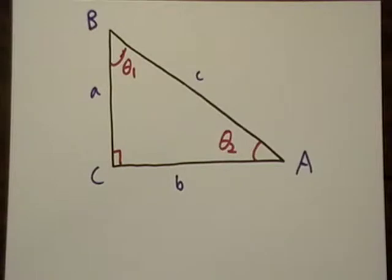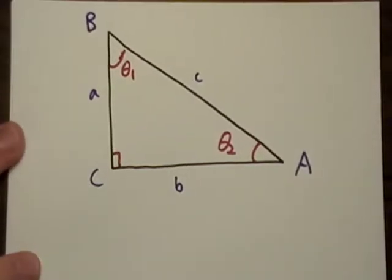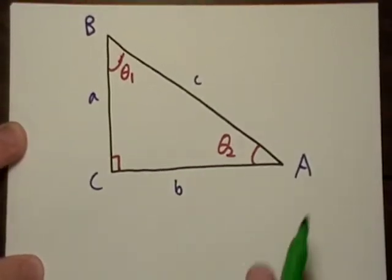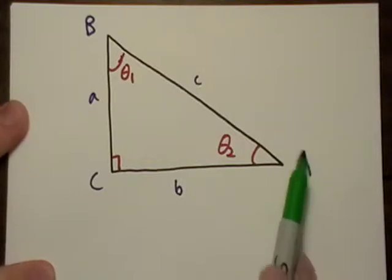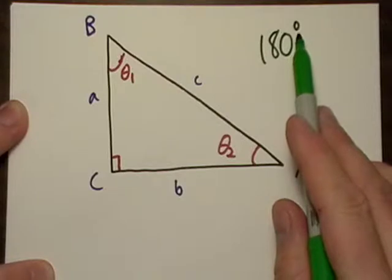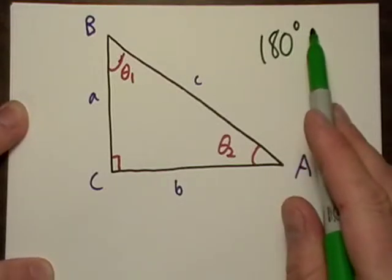So here I've got a right triangle, and what you're going to usually see, notice that there are 180 degrees in a triangle, and there's 90 here.